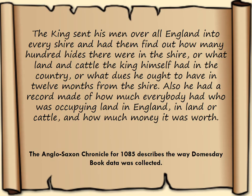Here's a source from the Anglo-Saxon Chronicle for 1085, describing how the Domesday Book data was collected: 'The king sent his men over all England into every shire, and had them find out how many hundred hides there were in the shire, or what land and cattle the king himself had in the country, or what dues he ought to have in twelve months from the shire. Also, he had a record made of how much everybody had who was occupying land in England, in land or cattle, and how much money it was worth.' This gives us hints about how wealth was measured at this time — taxation was recorded, but much of wealth didn't actually relate to cash value.